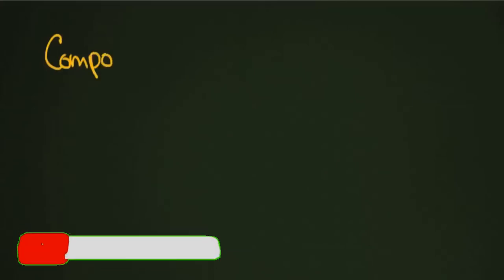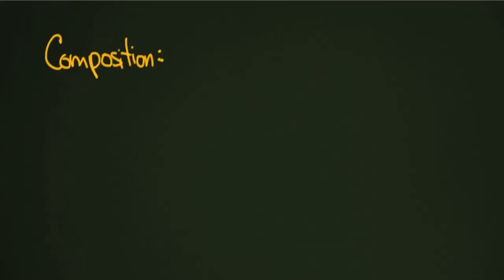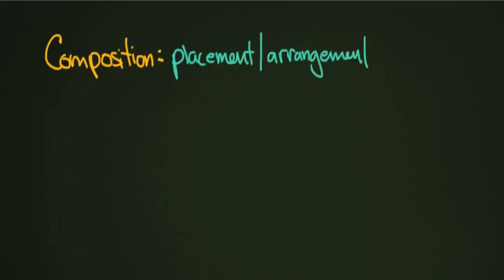Do you ever wonder how photographers decide how to set up their photographs — what to put where and why? This process is called composition, and it's basically how you put together a photograph. The definition, as found in most dictionaries, would be something along the lines of the placement and arrangement of the visual elements or the ingredients in a work of art or a photograph.